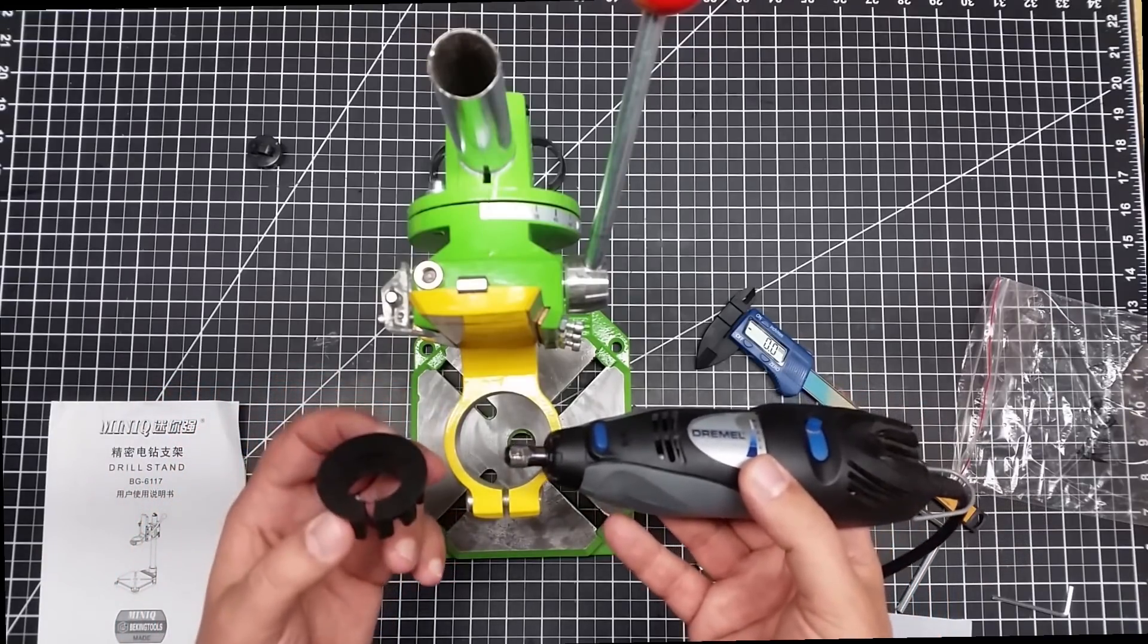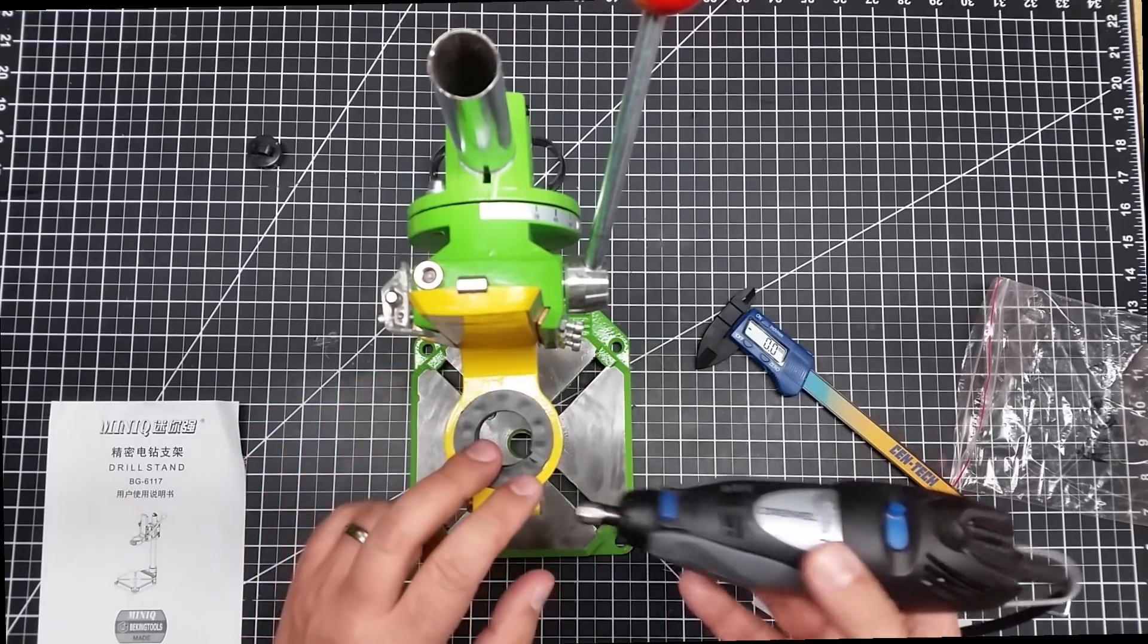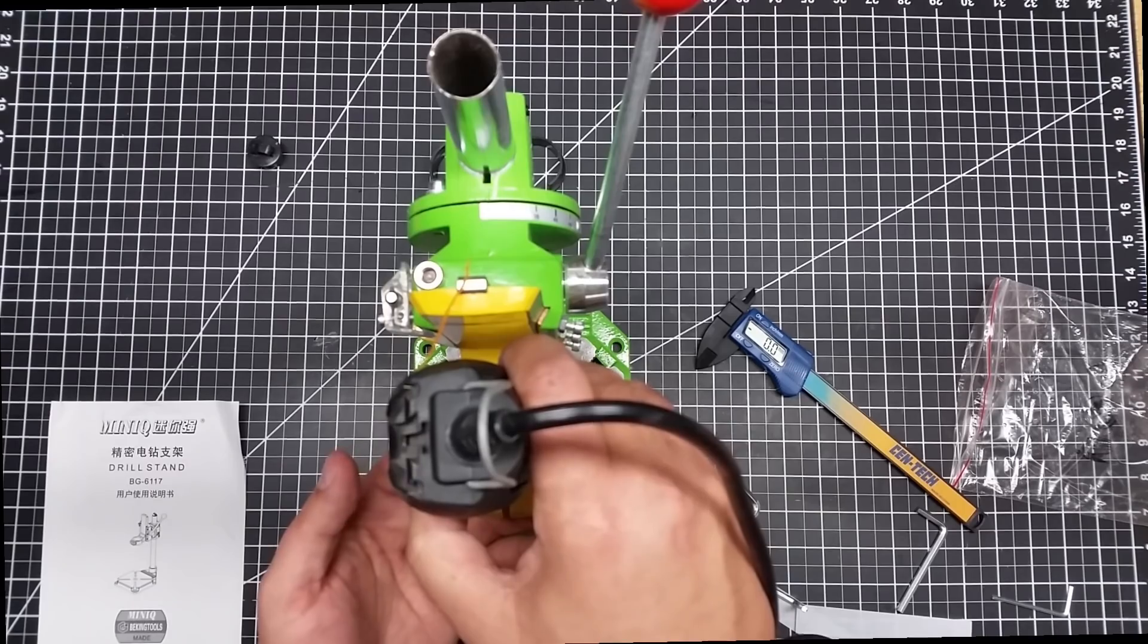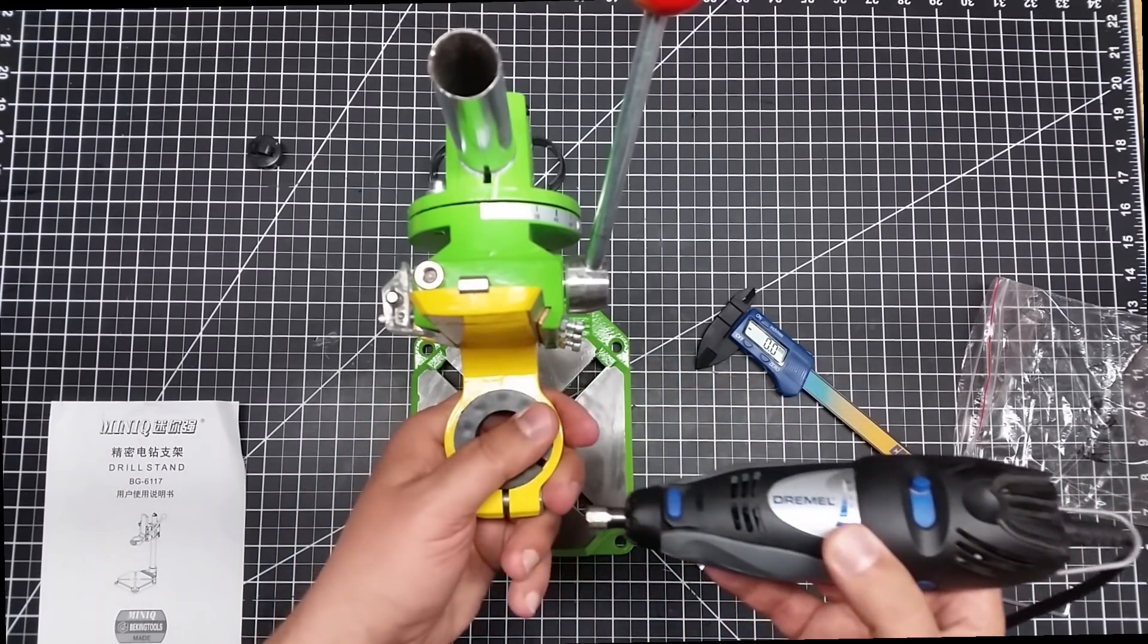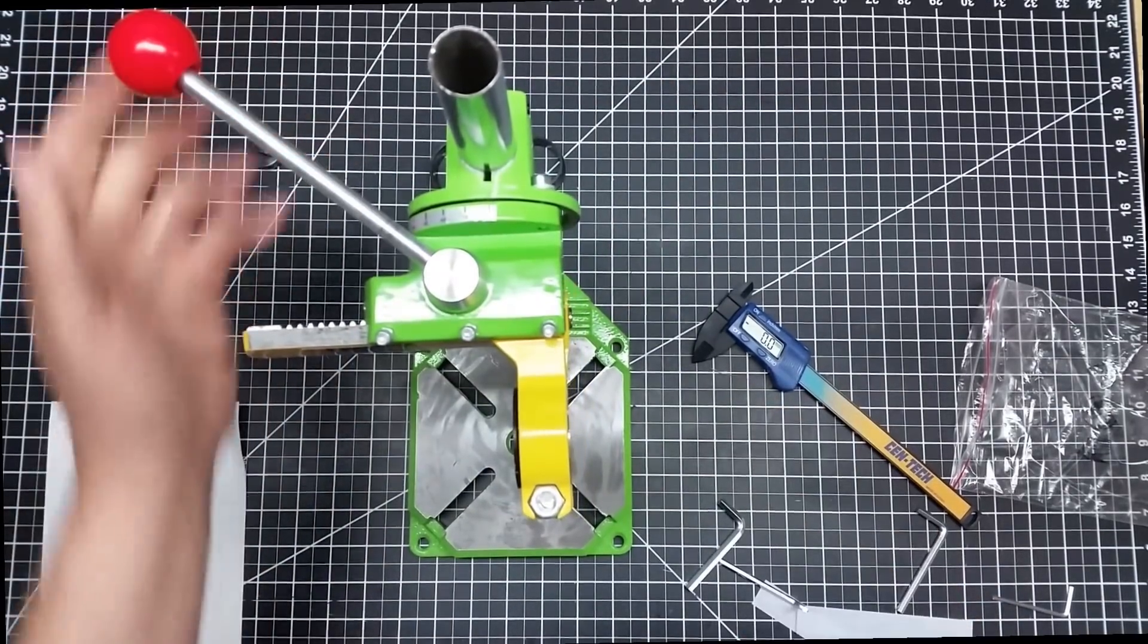But what I'm going to do and you kind of get a hint where this is going to be going a little bit is I'm going to in Fusion 360 design and print a retaining ring for this to receive my dremel tool to go in the top of it.